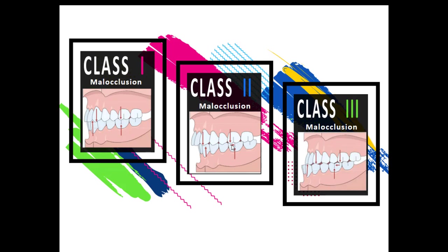Now let's look at the three all lined up together, focusing strictly on the molar classification. In class 1, the mesial buccal cusp occludes directly to the mandibular first molar. In class 2, the mesial buccal cusp is mesial to the buccal groove. And in class 3, the mesial buccal cusp is distal to the groove. For class 2 and class 3, the distance from the cusp to that buccal groove has to be at least the width of a premolar.